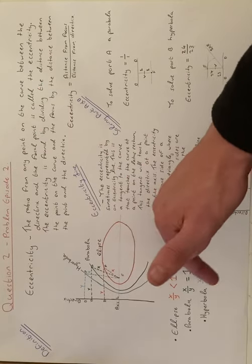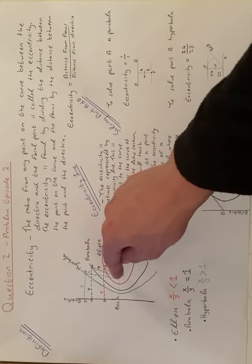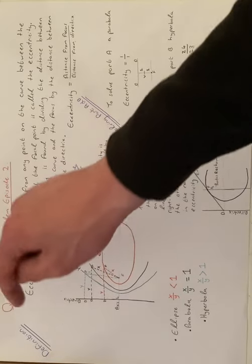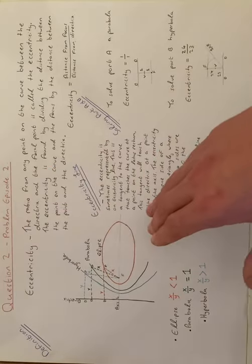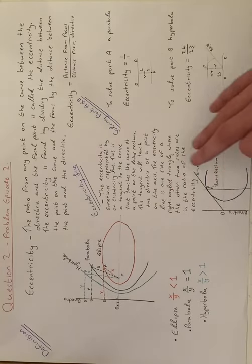For hyperbola then, it's the opposite of the ellipse. So your x over y is greater than one. What this means is your distance from the focal point to your point over your distance from your point to your directrix will be greater than one. That's how you know that it's a hyperbola.